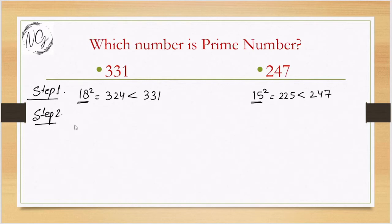In the second step, you have to write all the prime numbers less than 18, so it will be 2, 3, 5, 7, 11, 13, and 17. Same way we can write the prime numbers less than 15: 2, 3, 5, 7, 11, and 13.